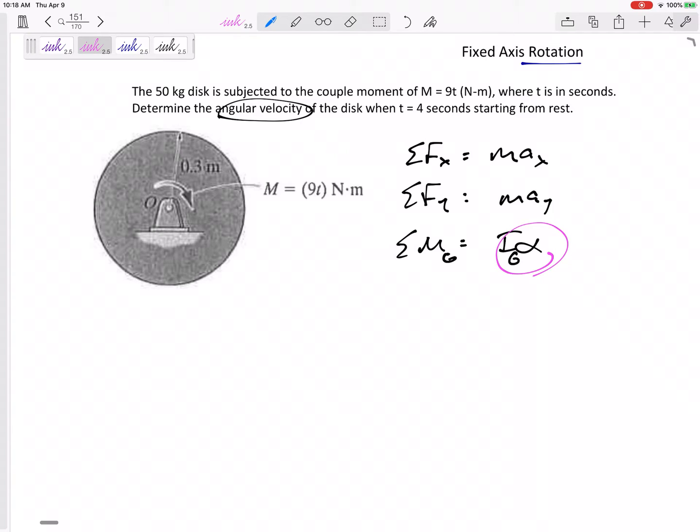Let's stick with our usual setup: sum of forces in x, sum forces in y. You could do these and you would get that Ox is zero, Oy equals the weight of the disk, but it wouldn't really add anything. I'm going to go ahead and jump to my moment equation.